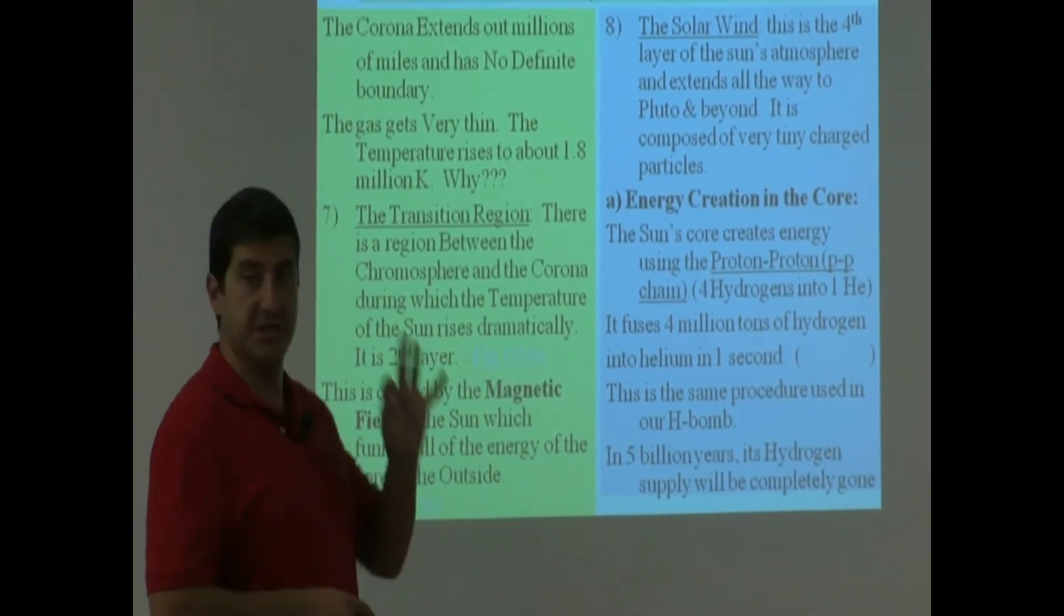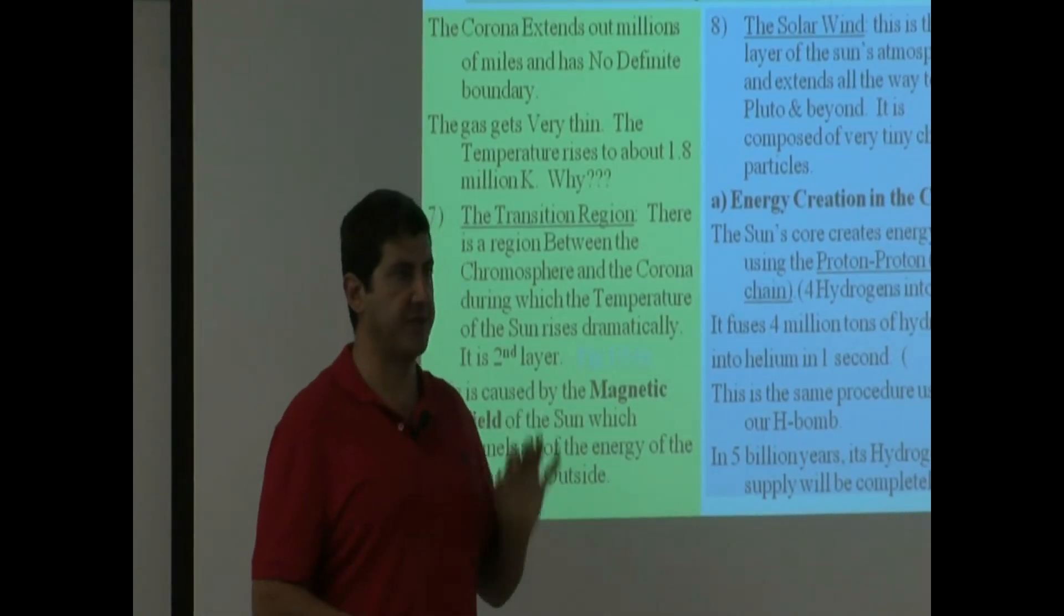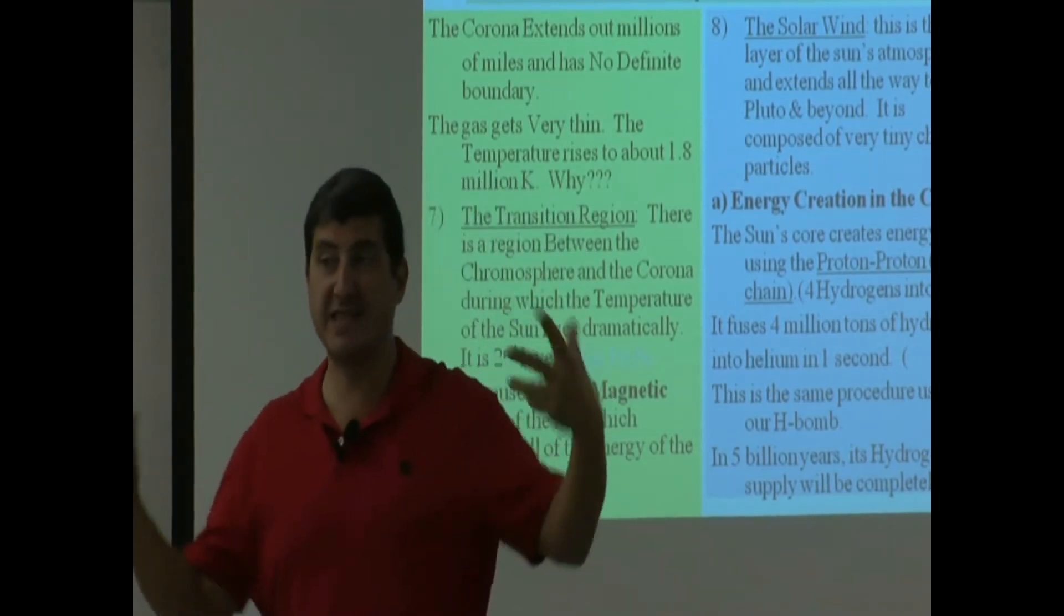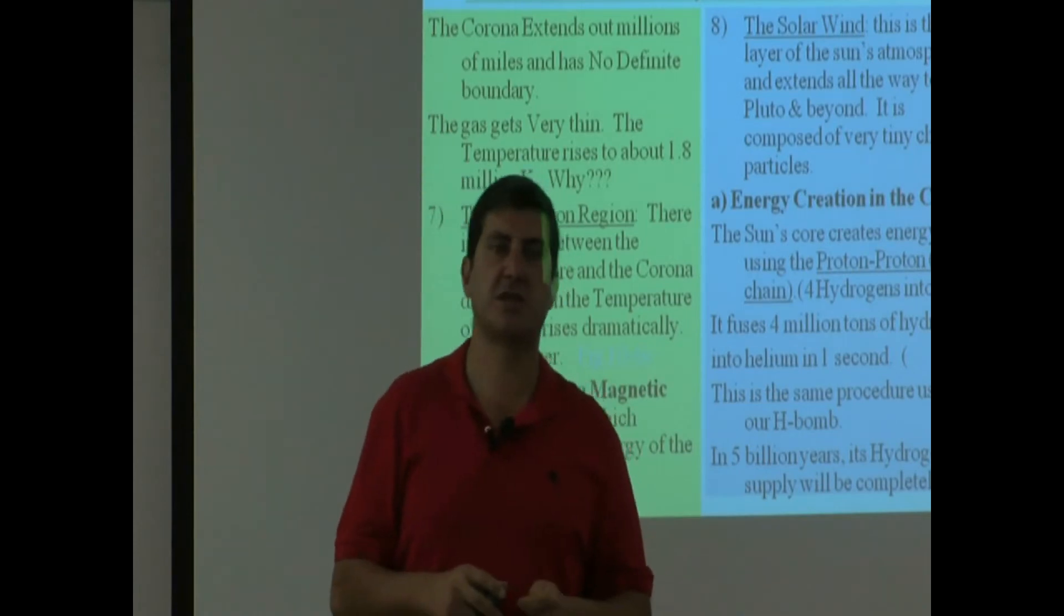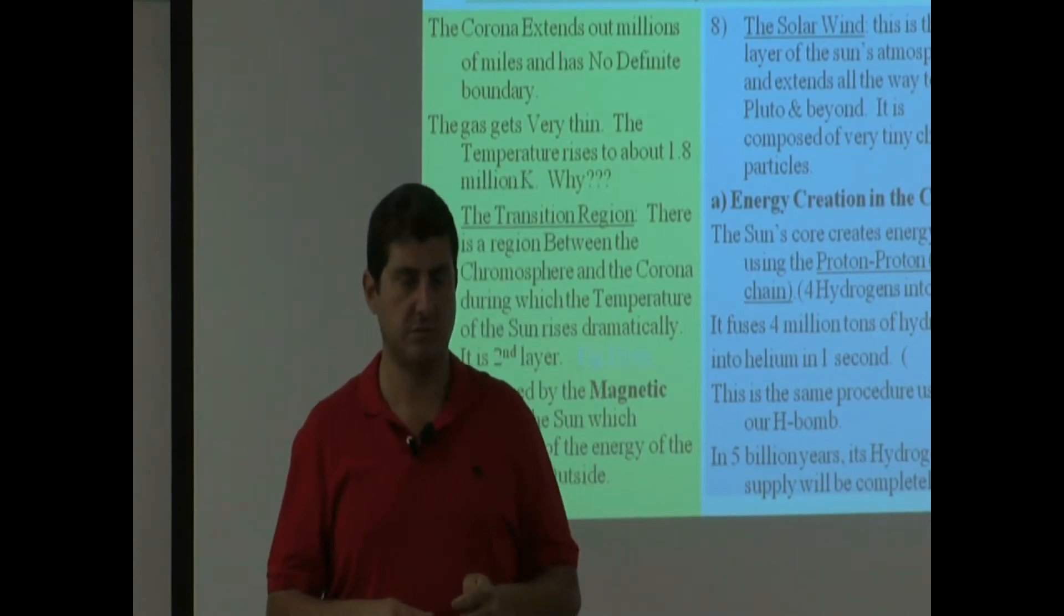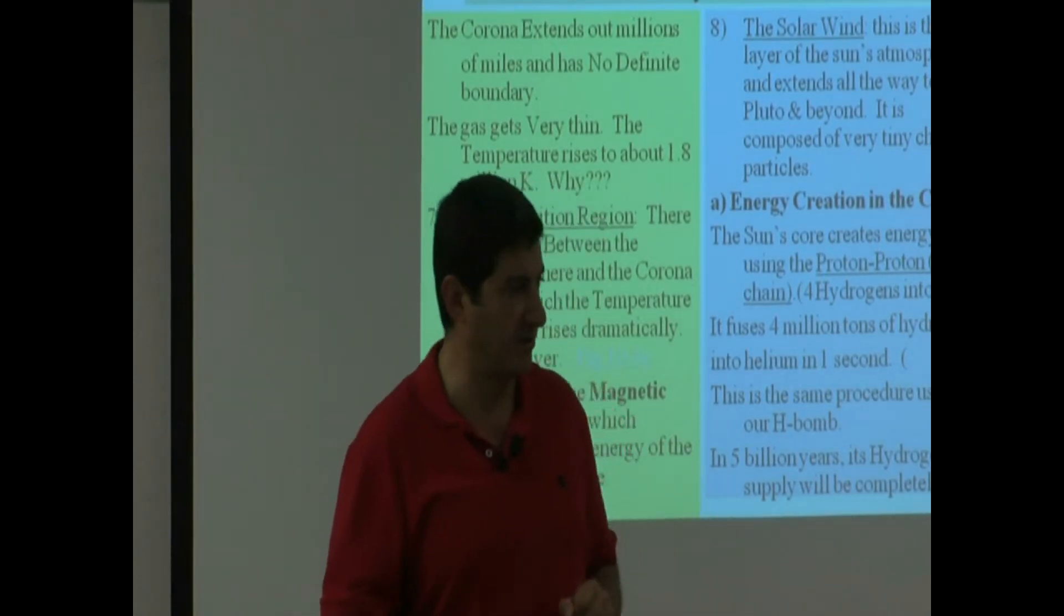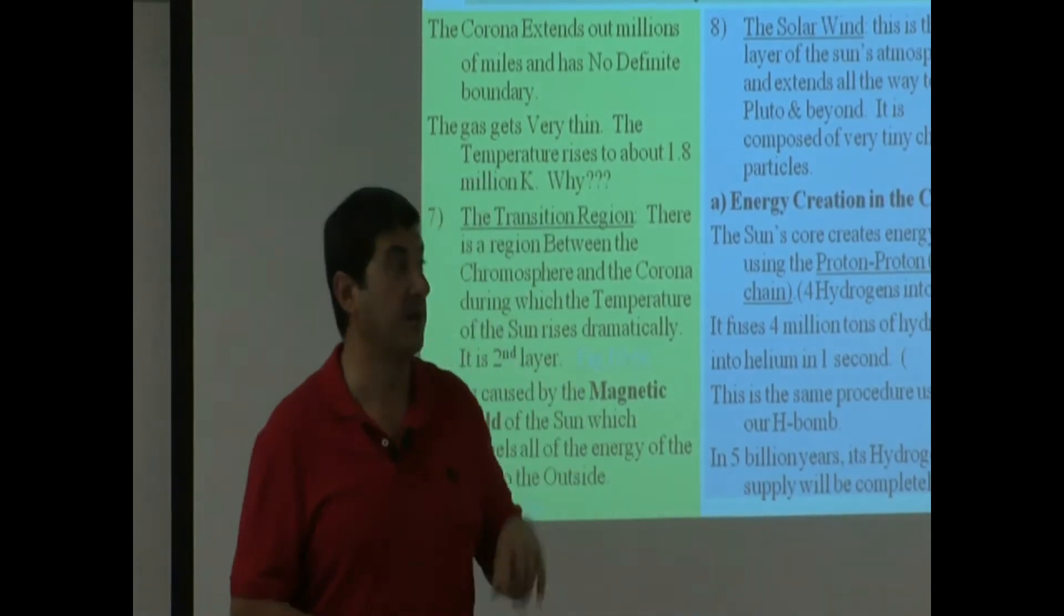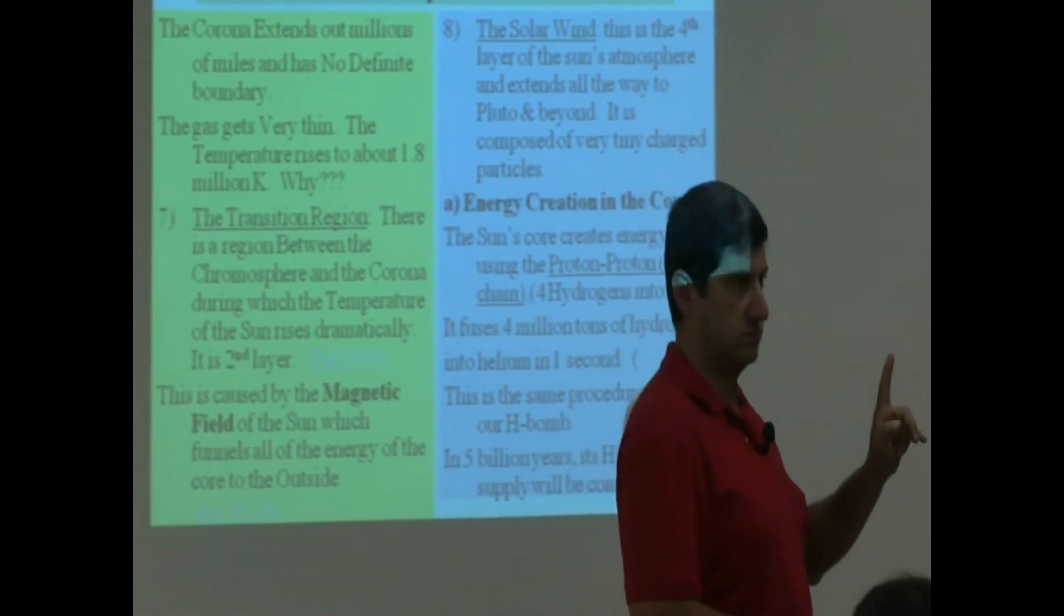In five billion years from now, roughly, the hydrogen supply of the sun will no longer exist, or even if it does exist, it won't be in usable form anymore, and the sun will start dying. Oh, sad news, right? Write it on your iPhone calendars, put it on your iPods, iPhones, put it on your calendar. The sun will take one billion years after that to die.